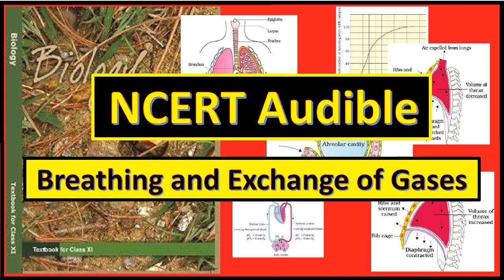We have the ability to increase the strength of inspiration and expiration with the help of additional muscles of the abdomen. On an average, an adult human breathes 12 to 16 times per minute. The volume of air involved in breathing movements can be estimated by using a spirometer, which helps in clinical assessment of pulmonary functions. Respiratory Volumes and Capacities: Tidal volume is the volume of air inspired or expired during a normal respiration — approximately 500 ml. A healthy man can inspire or expire approximately 6,000 to 8,000 ml of air per minute.